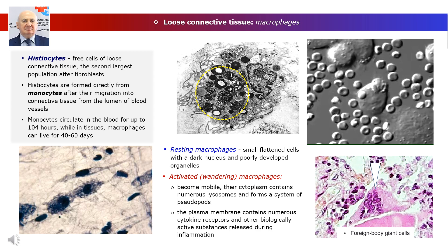The macrophages can revert to an inactive phase, but mostly perish through apoptosis and are phagocytized by neighboring macrophages. In areas of inflammation, histiocytes can merge into giant multinuclear cells, or foreign-body giant cells.